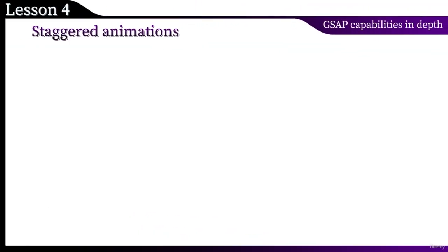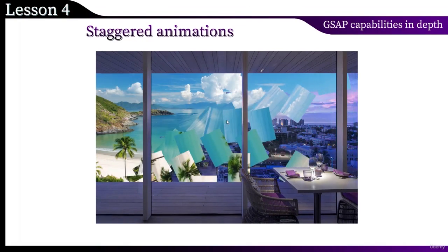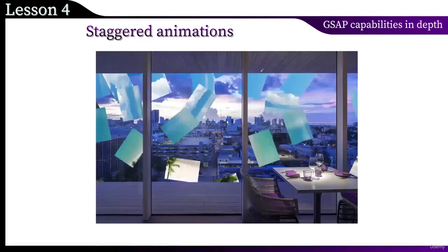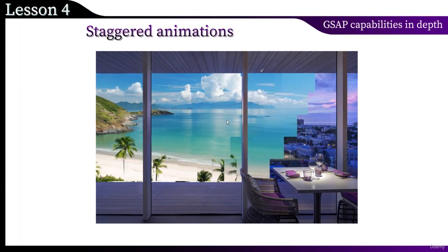We continue to explore staggered animations. In this lesson, we will examine configuration objects as a value for the stagger property. As an example, there will be an animation with a change in the landscape outside the window when you press the left mouse button.